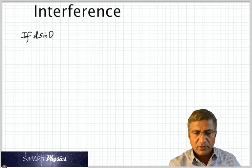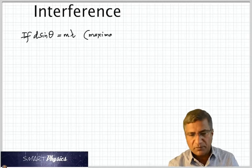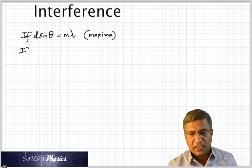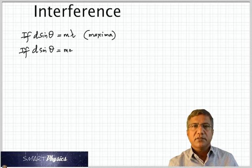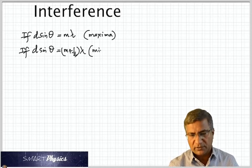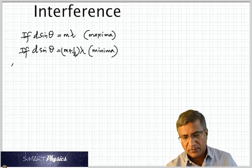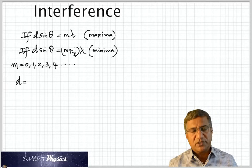So if D sin theta is equal to M lambda, you get maximum. And if D sin theta is M plus half lambda, you get minima or darkness. And M can take values 0, 1, 2, 3, 4, etc.